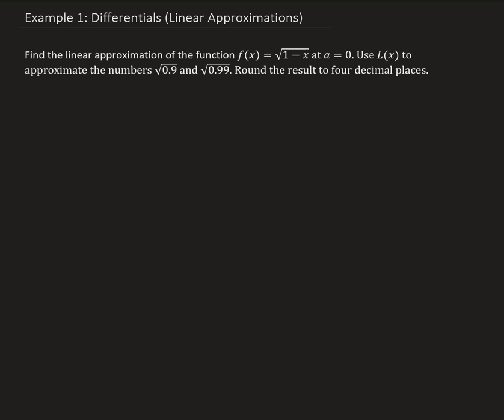In this example, we want to find the linear approximation of the function f(x) equals the square root of 1 minus x at a equals 0. And then we're going to use this linear approximation to approximate the numbers square root of 0.9 and the square root of 0.99.